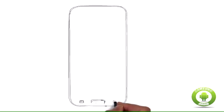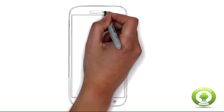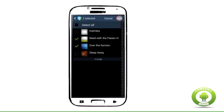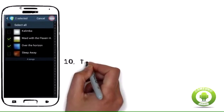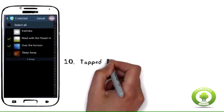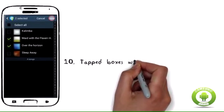Step 10. Tapped boxes will have a checkmark. Continue selecting boxes until you have marked all the songs you want to add to the playlist. Tap the Done button when you have finished adding songs.